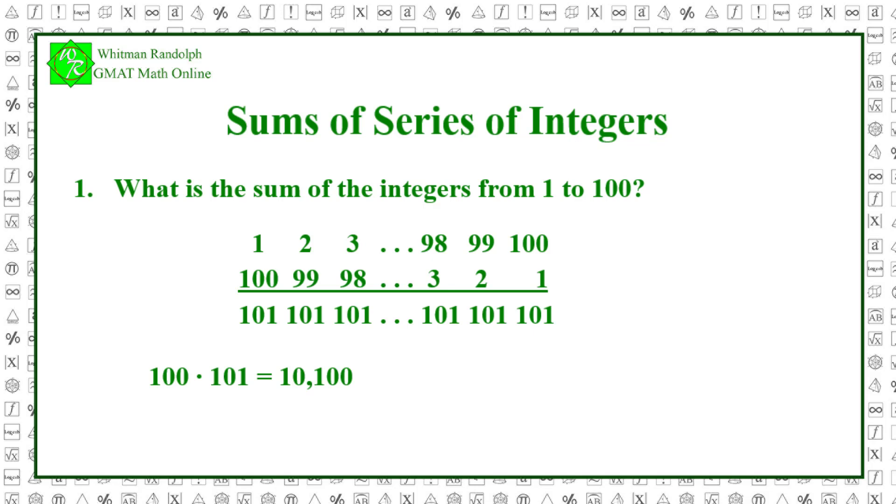But remember, this is the sum of 1 to 100 twice. So to get the sum of 1 to 100, we divide this value, 10,100, by 2. 10,100 divided by 2 equals 5,050. The sum of the integers from 1 to 100 is 5,050.